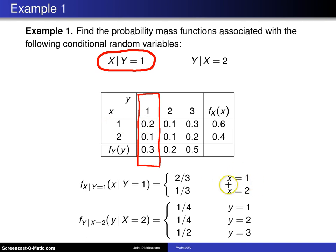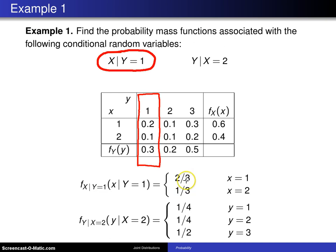That value of two thirds is associated with X equals 1. The other value is for X equals 2: the joint value is 0.1 divided by the marginal value 0.3, which gives one third. So here is the conditional distribution of X given Y equals 1. Notice that this is a legitimate probability mass function because these two values sum to 1.